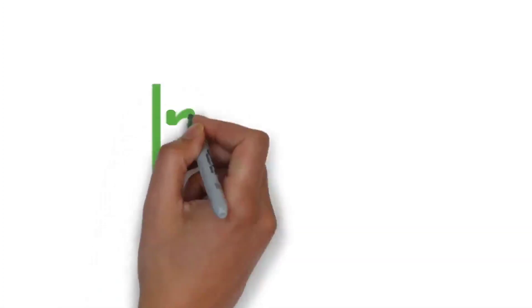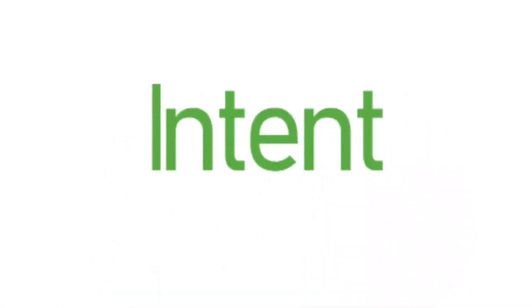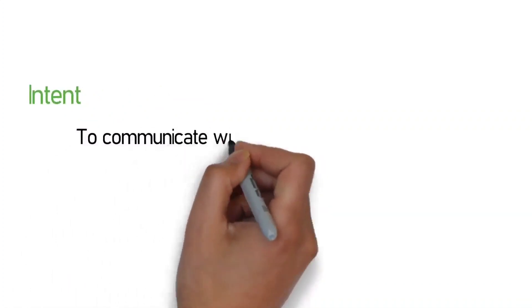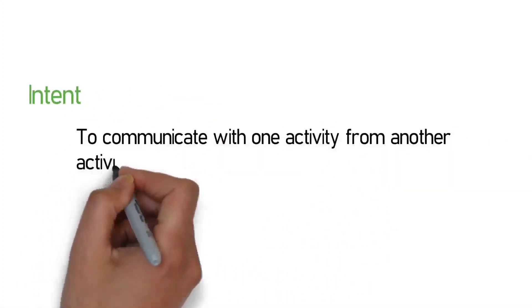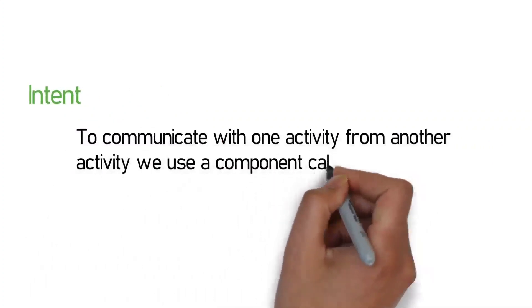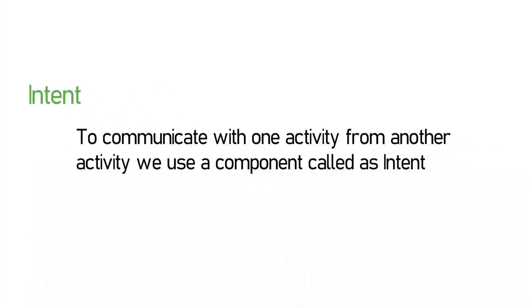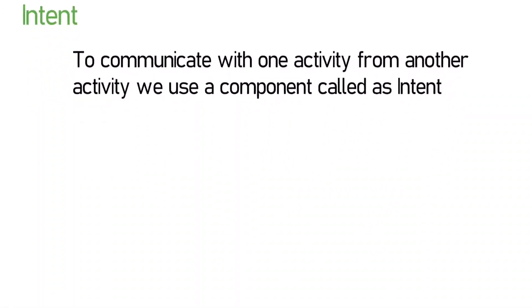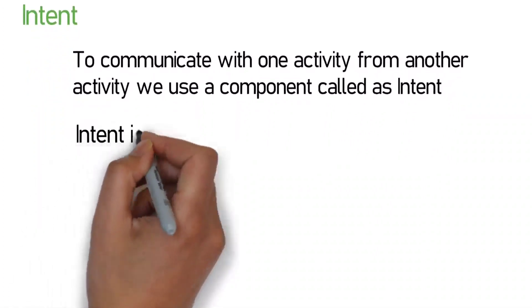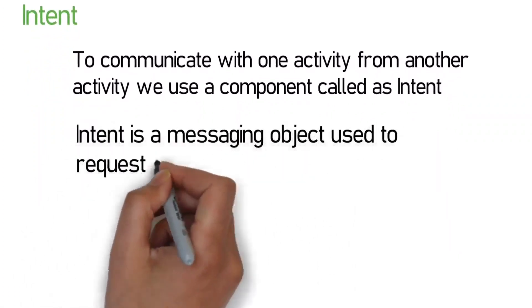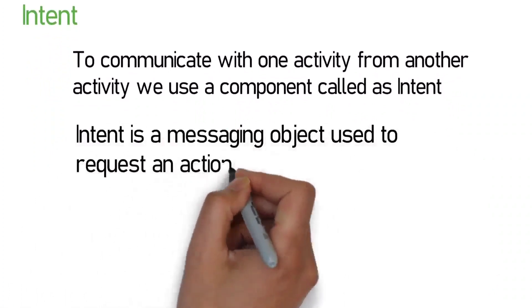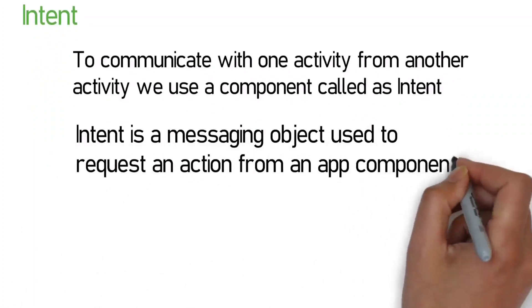This is the intent definition. The intent is called an object. To communicate with one activity from another activity, we use a component called intent. Intent is a messaging object used to request an action from an app component.